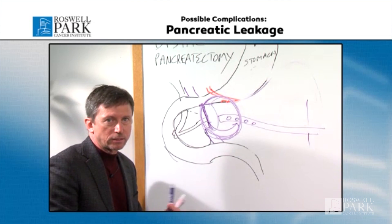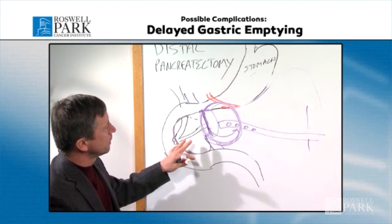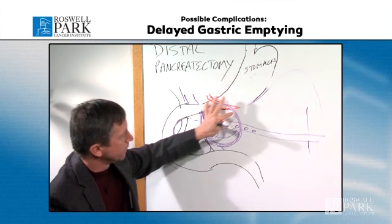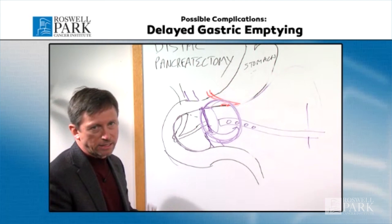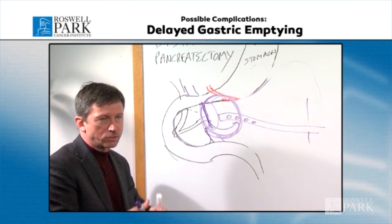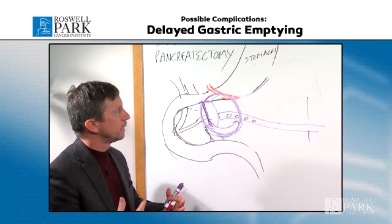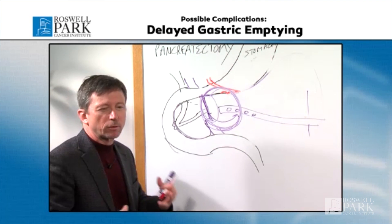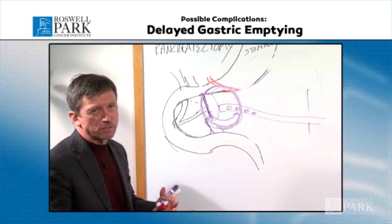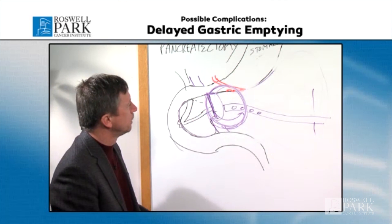Usually these are not a big problem, but sometimes they can get infected, and if that happens it could prolong your hospital stay or lead to readmission. We do give patients antibiotics prior to surgery, but that is something that can happen. Because the stomach sits right next to the pancreas and the surgical area, we will also see cases of delayed gastric emptying, where the stomach may be slow to empty. You may feel full more quickly or have upper abdominal discomfort such that you won't want to eat as much. That happens in about 15 to 20 percent of cases, especially when there's a problem with fluid collection or leak.